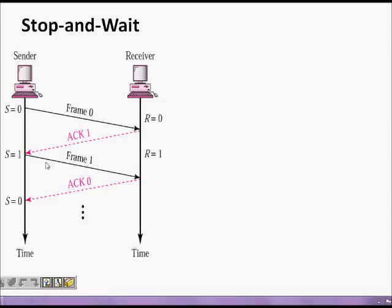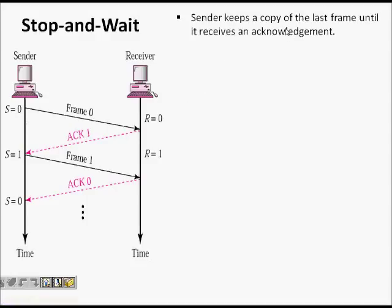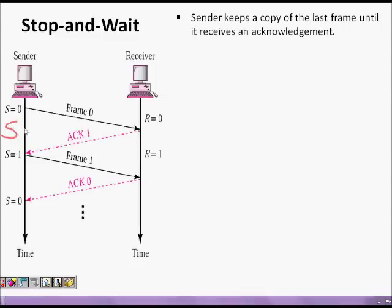Once it has been received properly by the receiver, only then can I send a new frame. The sender keeps a copy of the last frame sent. The sender has a variable s, which is a binary variable that can have value zero or one. Frame numbers are zero and one. The receiver has a variable r, equal to the frame number it is expecting to receive.